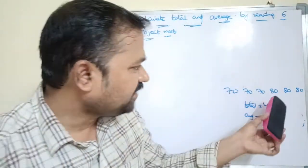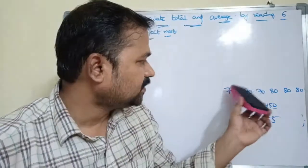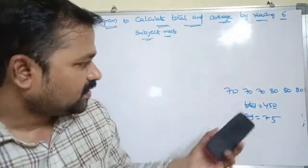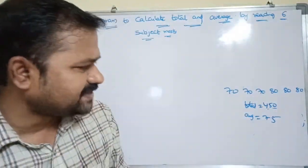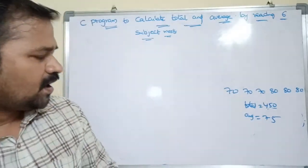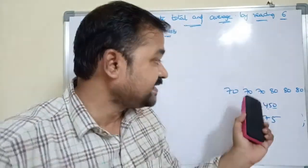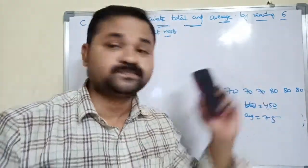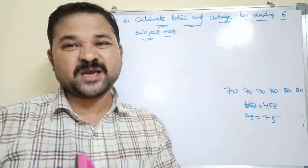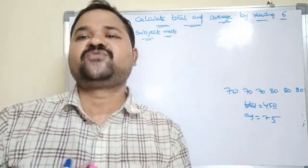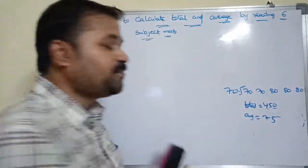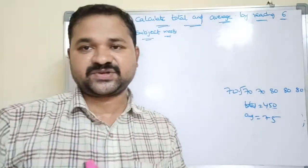So here we can declare marks as integer type, whereas total and average as floating point type. Or we can declare marks as also a floating point data type. Why? Because marks may be of type float — we can get some marks as 70.5 or 70.2.